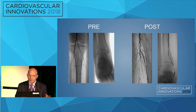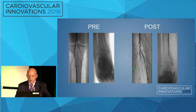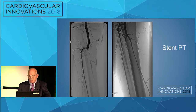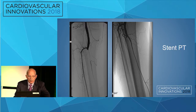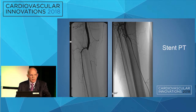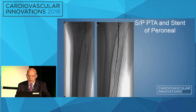Here's an example, pre and post - this was done antegrade, basically trying to reestablish flow. In this case, the posterior tib was the only vessel we could reestablish into the foot. Here's a short segment occlusion of a tibial perineal trunk - we used a coronary drug-eluting stent to reestablish a posterior tib that allowed complete inflow.